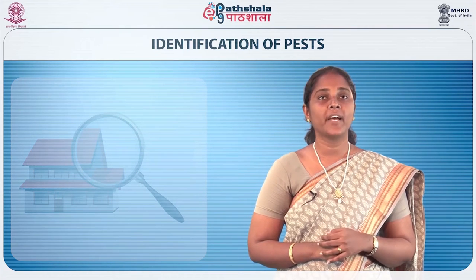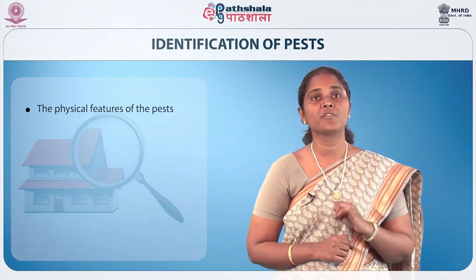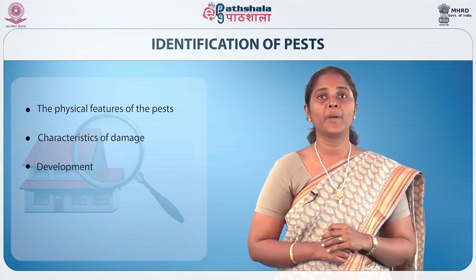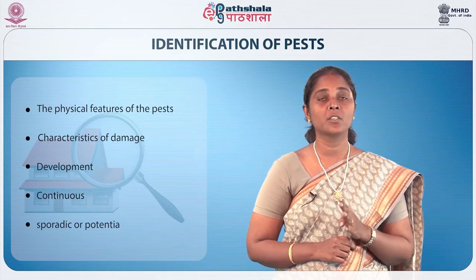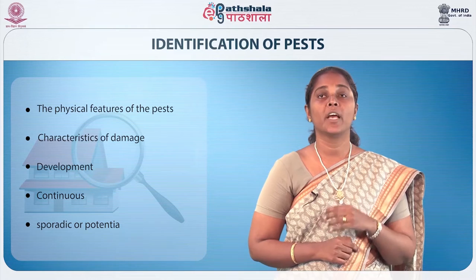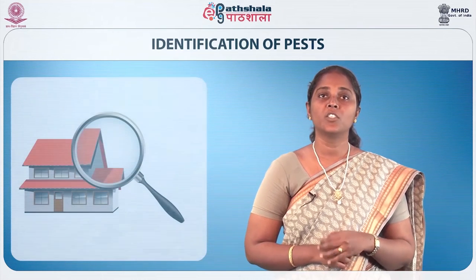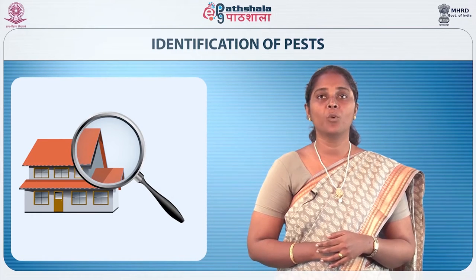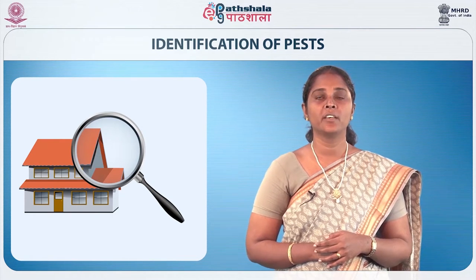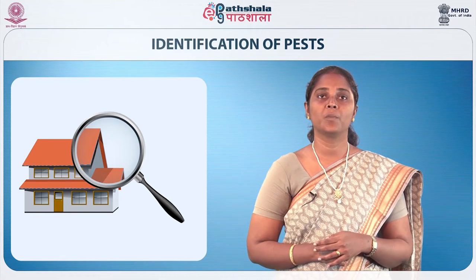To identify and control the pest, you need to know its physical features, the characteristics of damage, its development, whether it is a continuous, sporadic or potential pest, and what your control goals are. Always control a pest only if it is causing more harm than a reasonable limit, and use a control strategy that will reduce the number of pests causing as little harm as possible.